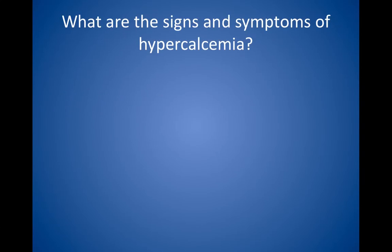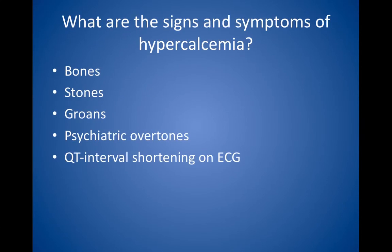What are the signs and symptoms of hypercalcemia? Hypercalcemia is often asymptomatic and discovered by routine lab tests. When symptoms are present, recall the following rhyme: bones, stones, groans, and psychiatric overtones. For bones, look for bone changes such as osteopenia and pathologic fractures. Stones refer to kidney stones and polyuria. Groans refers to abdominal pain, anorexia, constipation, ileus, nausea, and vomiting. Psychiatric overtones refers to depression, psychosis, and delirium or confusion. Abdominal pain may also be caused by peptic ulcer disease and/or pancreatitis, both of which have an increased incidence with hypercalcemia. The EKG classically shows QT interval shortening when hypercalcemia is present.